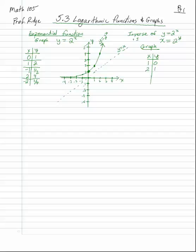Recall that for y equals 2 to the x, the domain is negative infinity to infinity and the range is 0 to infinity. When you take the inverse, the domain becomes the range and the range becomes the domain. So for y equals log base 2 of x, the domain is 0 to infinity and the range is all real numbers.